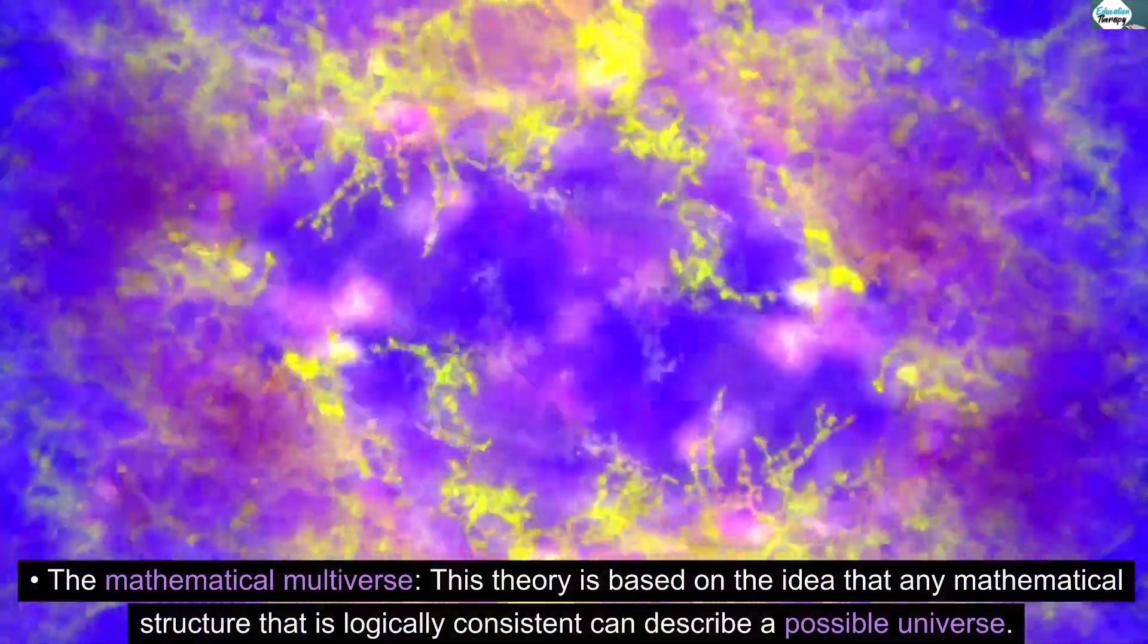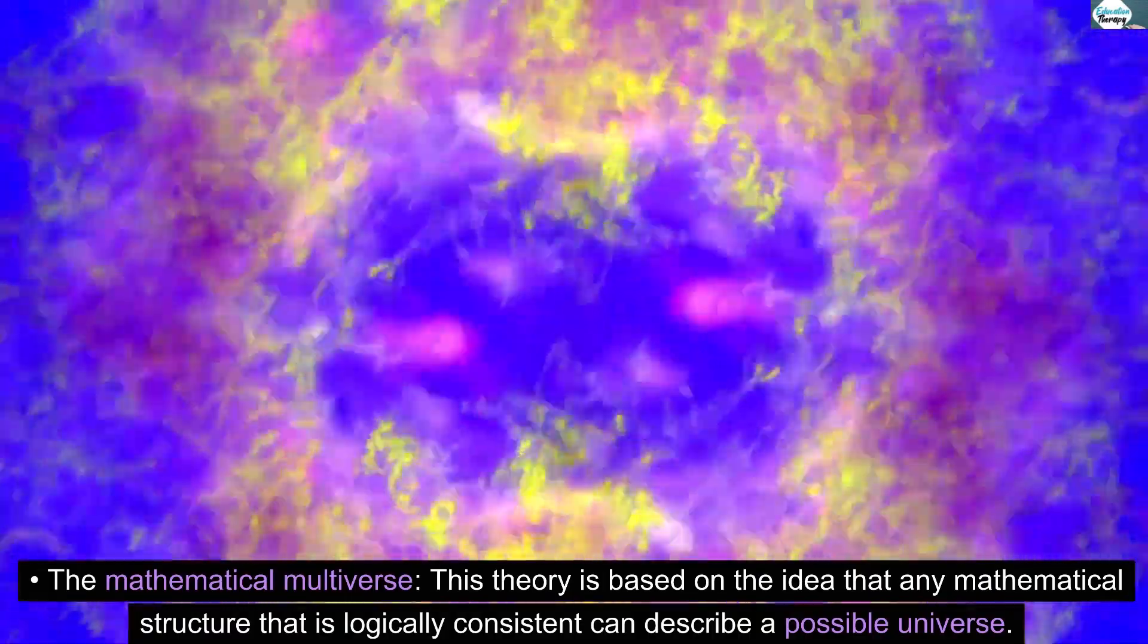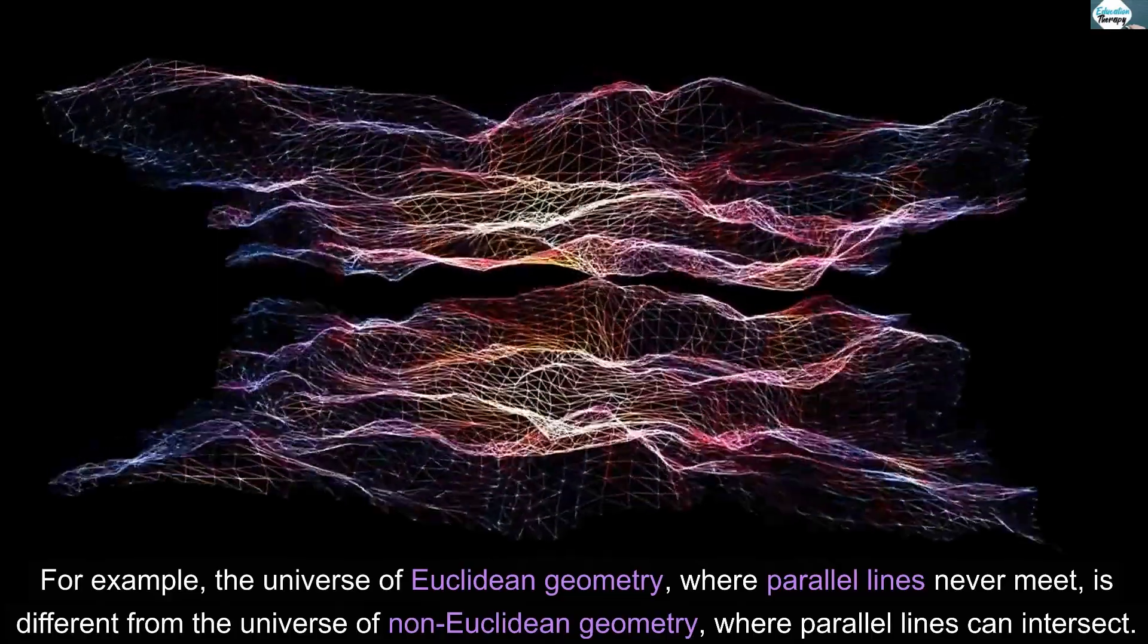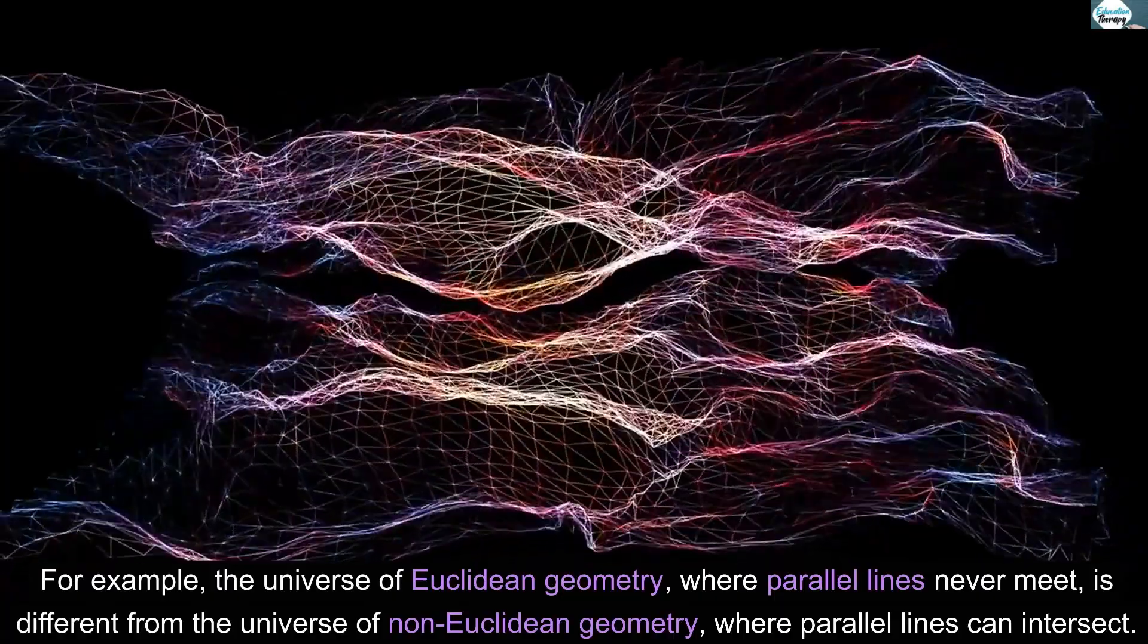The mathematical multiverse: this theory is based on the idea that any mathematical structure that is logically consistent can describe a possible universe. For example, the universe of Euclidean geometry, where parallel lines never meet, is different from the universe of non-Euclidean geometry, where parallel lines can intersect.